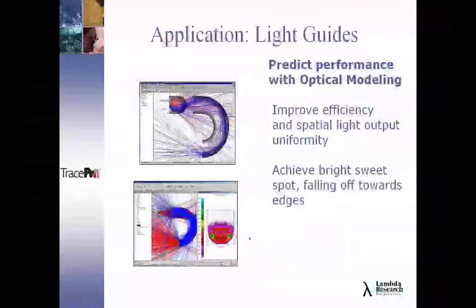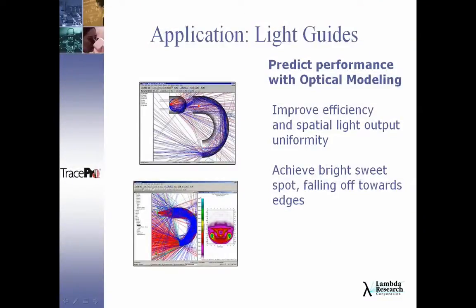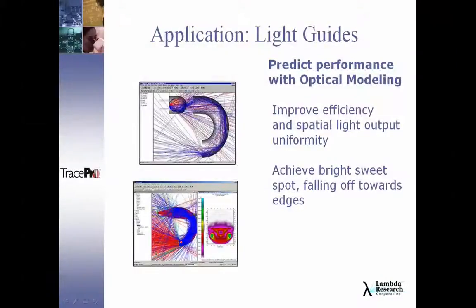TracePro can also handle light guides, predicting the efficiency and spatial light output through optical modeling. You can look at hot spots and fall-off. For example, a U-shaped light pipe might appear to produce uniform output, but TracePro can reveal that light is actually concentrated in the bottom half due to a two-mirror effect shuttling light down the pipe — a problem impossible to see visually, but easily simulated before building anything.